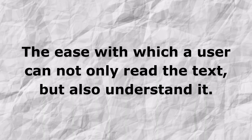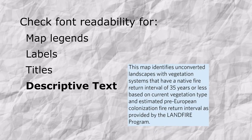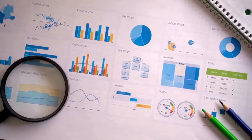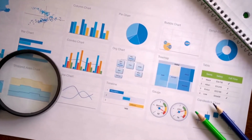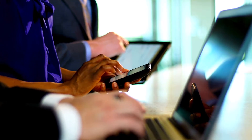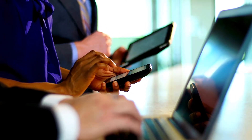Readability is the ease with which a user can not only read the text but also understand it. If your font is not readable, users cannot understand things like map legends, labels, titles, and any descriptive text that might go with your map. Remember that good font readability benefits not only users with low vision, but also those with dyslexia, as well as those using lower resolution screens, smaller screens, or accessing your content in bright sunlight, or in situations where screens are not necessarily steady or stable. Here are a few font readability tips to consider.